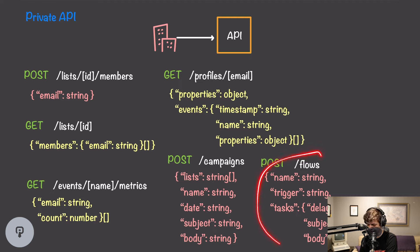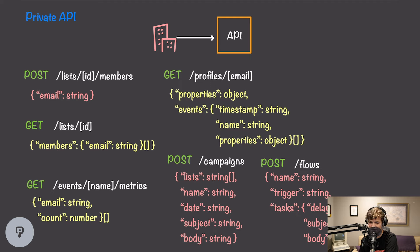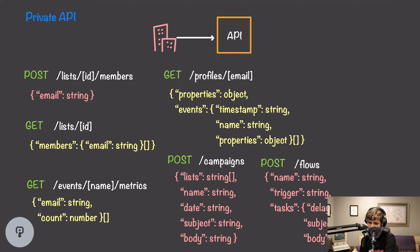To create a flow, customers include a name, a trigger corresponding to the event name that should trigger the flow, and a list of tasks — each consisting of an email to be sent and a number of hours to delay before sending. Once the customer makes this POST request, whenever that event occurs the email address that triggered it will be sent those emails at those specific time intervals. Through our API, customers can also track metrics and view specific email profiles, getting back any stored properties along with a list of events including timestamp, event name, and properties.